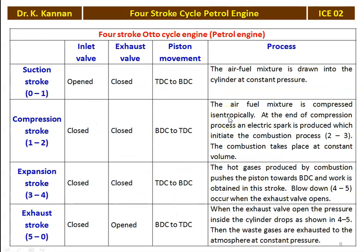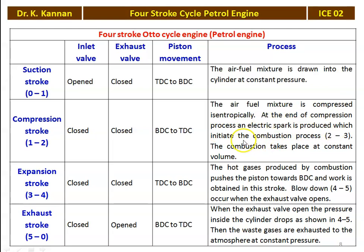There are six operations occurring in four different strokes. For 0 to 1, suction: inlet valve open, exhaust valve closed, piston moves from TDC to BDC, air-fuel mixture is drawn into the engine cylinder at constant pressure. For 1 to 2, compression: both valves closed, piston moves from BDC to TDC, air-fuel mixture is compressed isentropically. At the end of the compression process, an electric spark is produced which initiates combustion. For 2 to 3, combustion takes place at constant volume. For 3 to 4, expansion: both valves closed, piston moves from TDC to BDC, hot gases push the piston towards BDC and work is obtained.